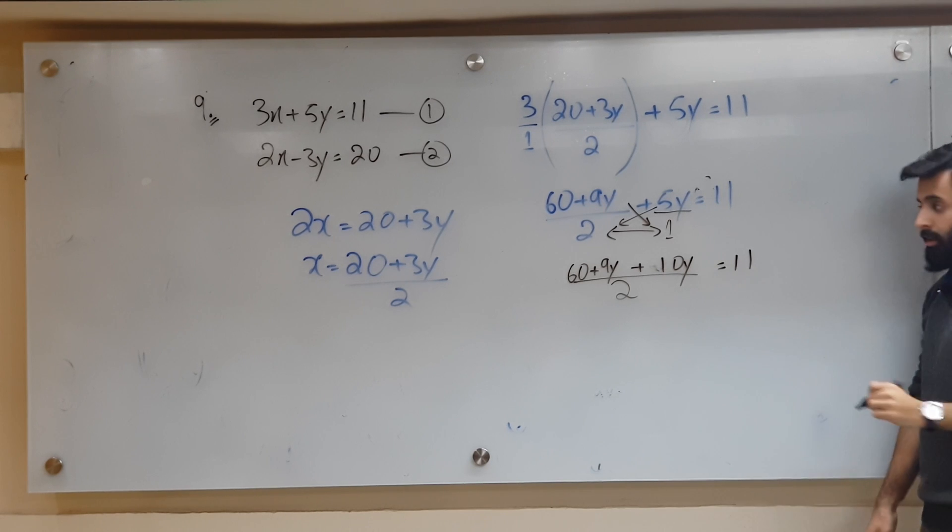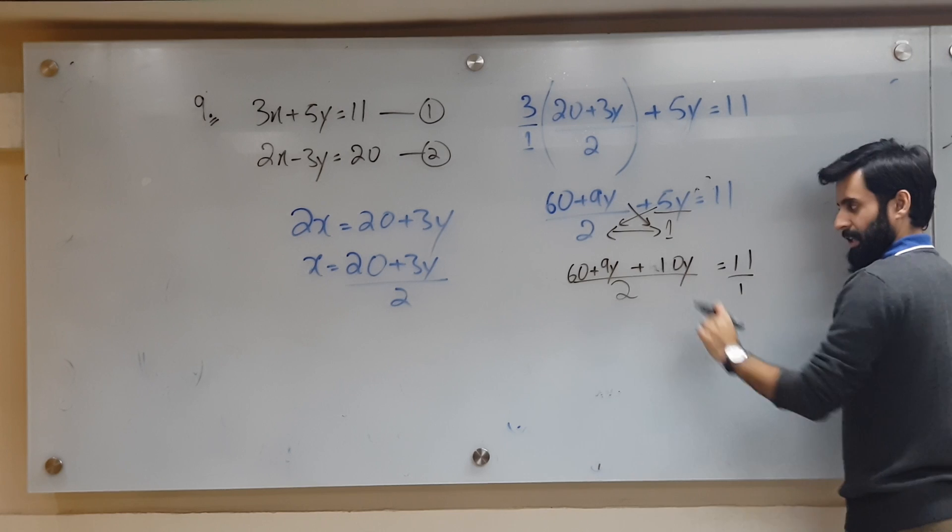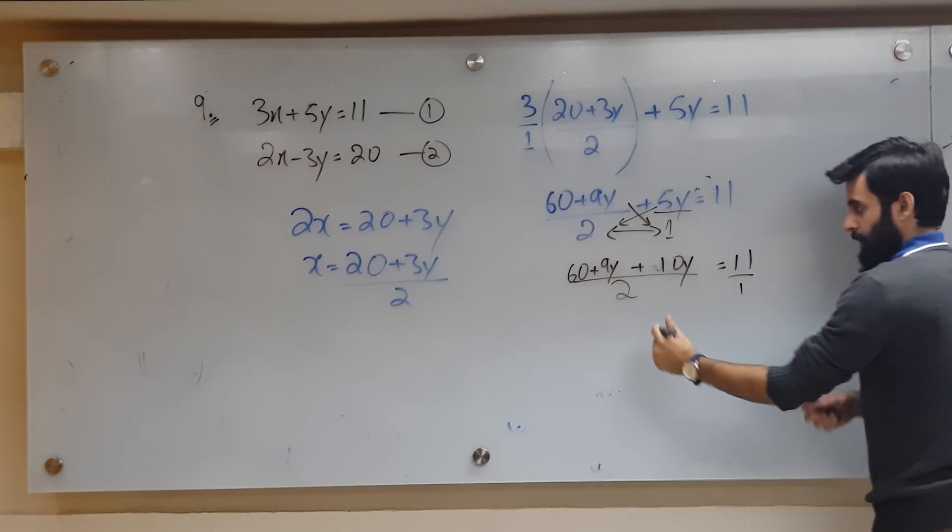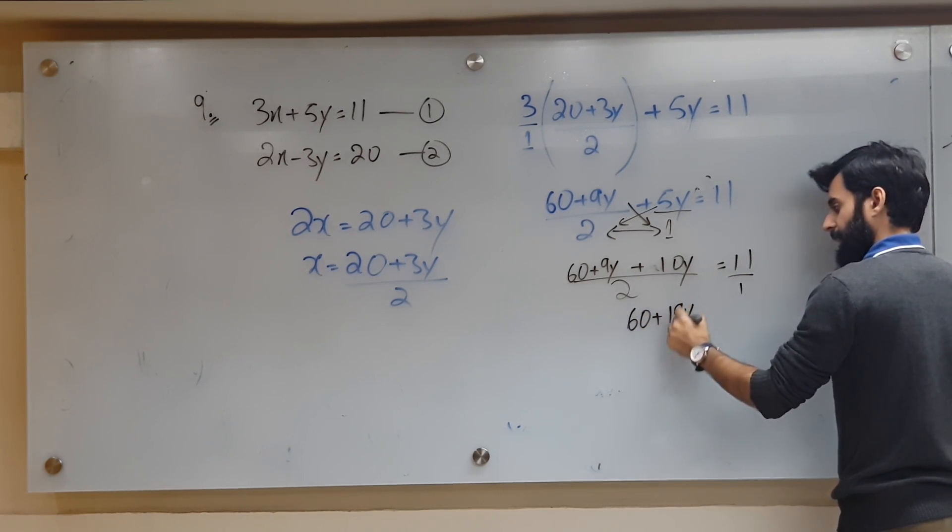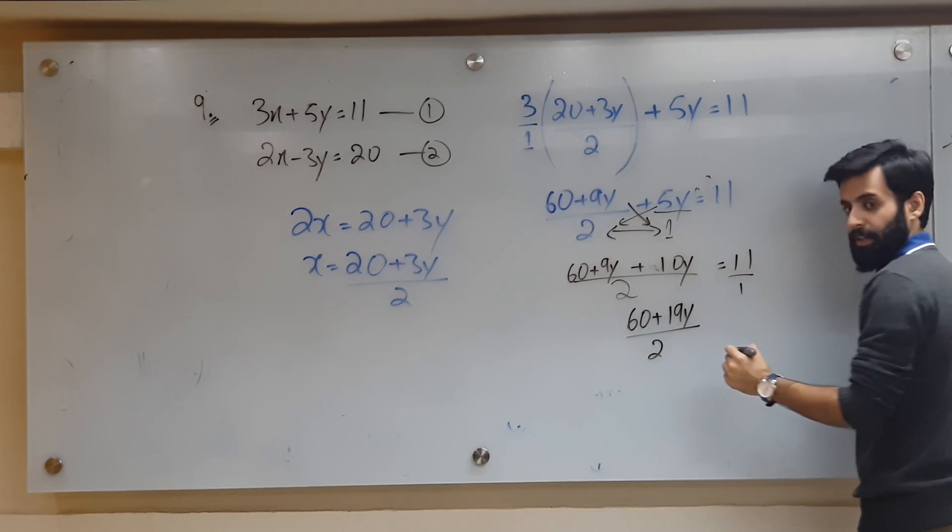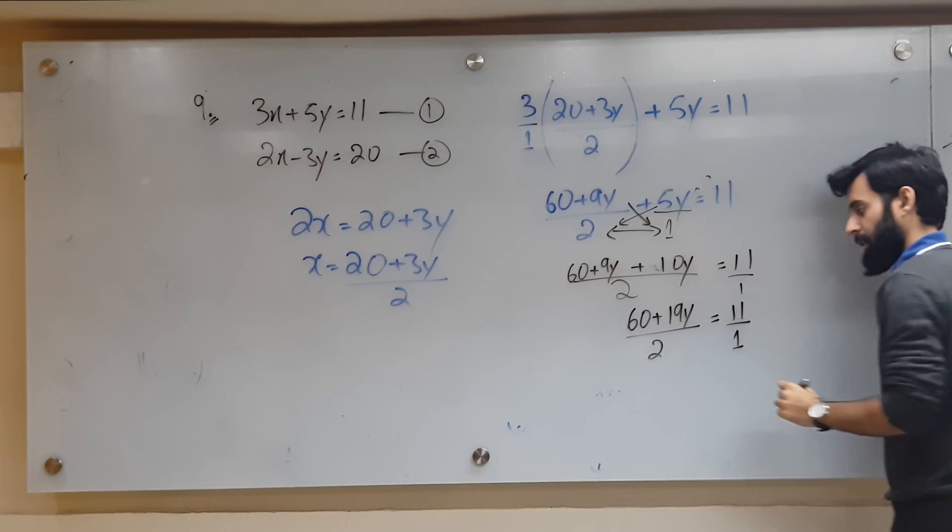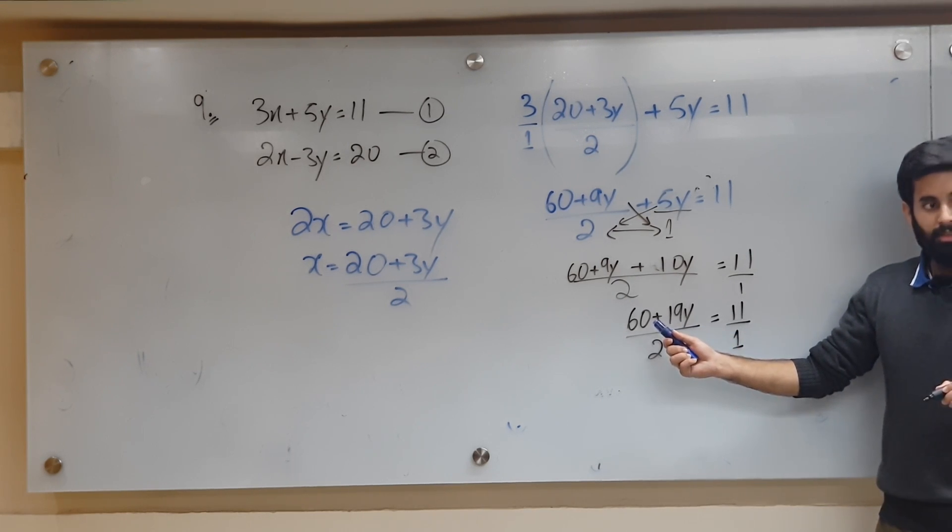Do you have like terms? You have 9y and 10y, which is 19y. So 60 will remain as it is plus 19y. Let's not use a calculator. Equals to 11 over 1, let's not use a calculator, still let's not use a calculator.